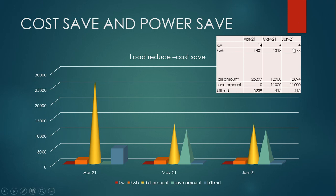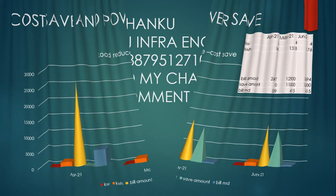For June month, the KW is 4, KWH is 1,176, billing amount is 12,890, and savings are 11,000. This means exactly every month there is 11,000 saved over the long term. If equipment or machinery increases, and you also increase by 5 KW load, then the load becomes 20 KW.